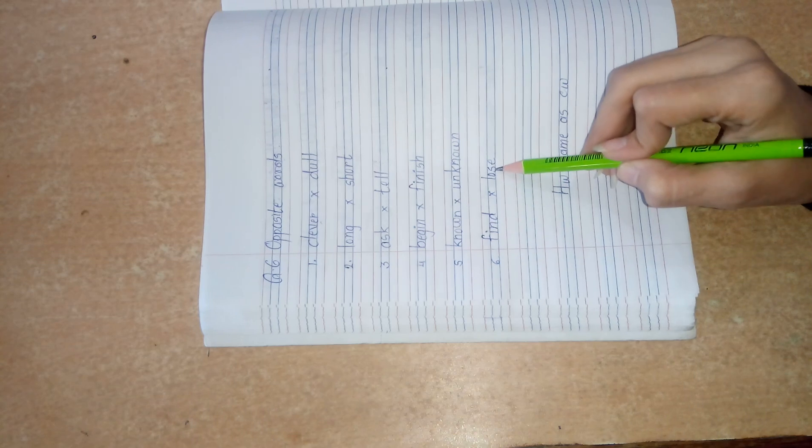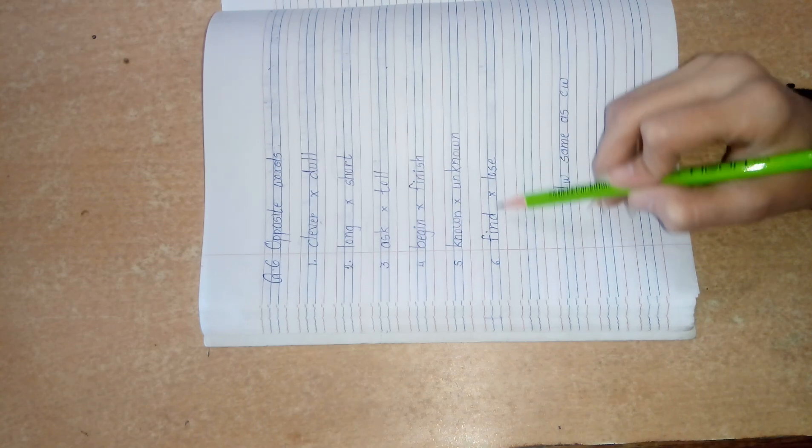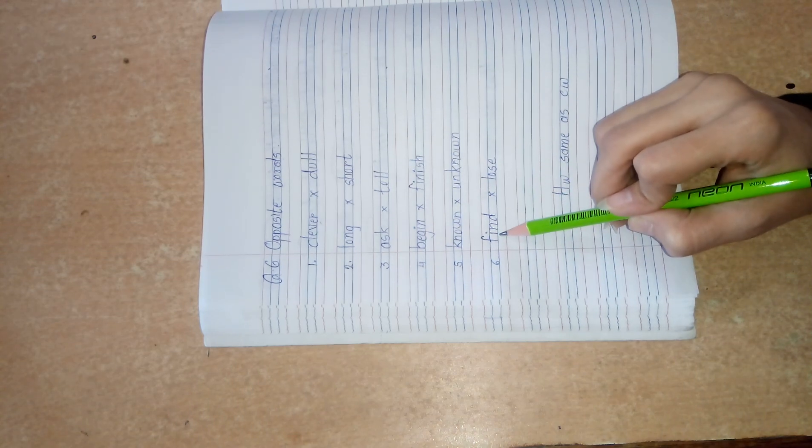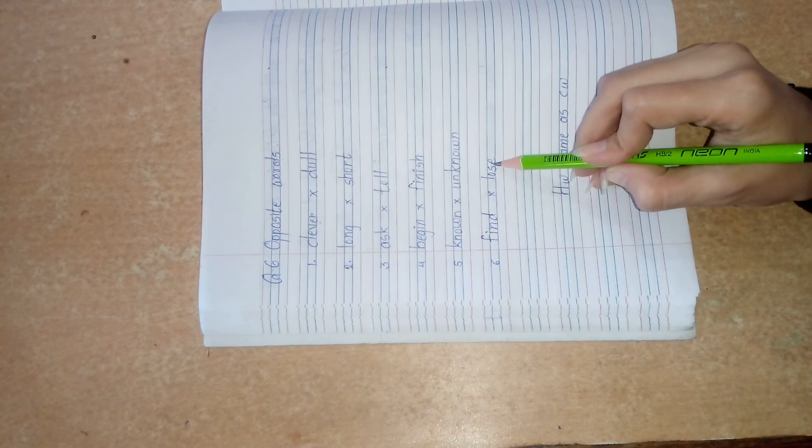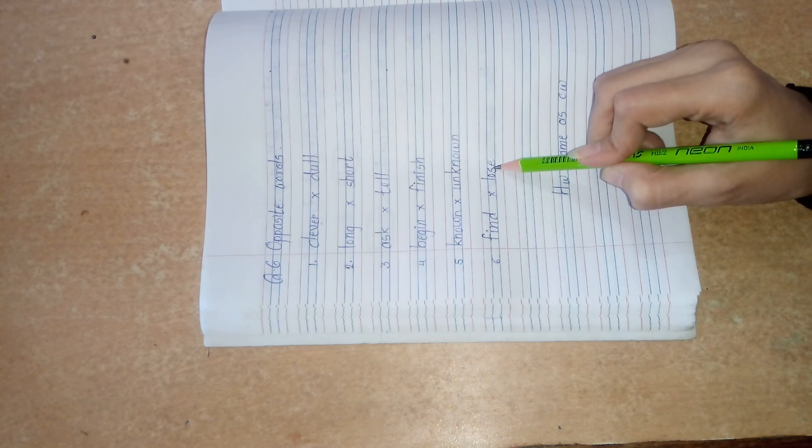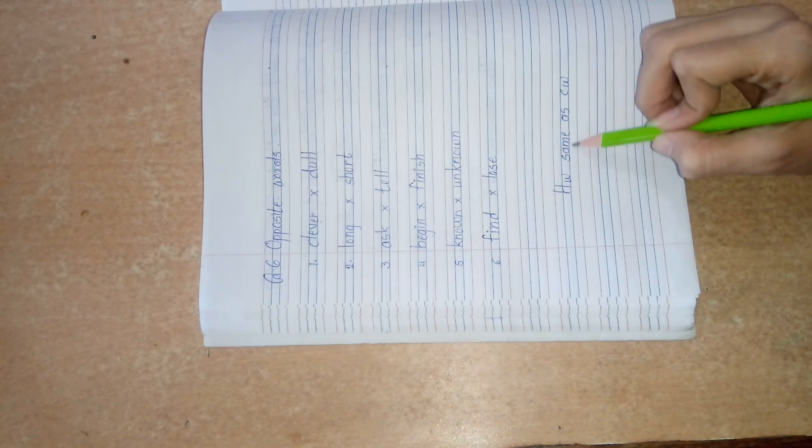6. Find, opposite, lose. Find means dhundna and lose means gum ho jana. In the same way, homework, same as classwork.